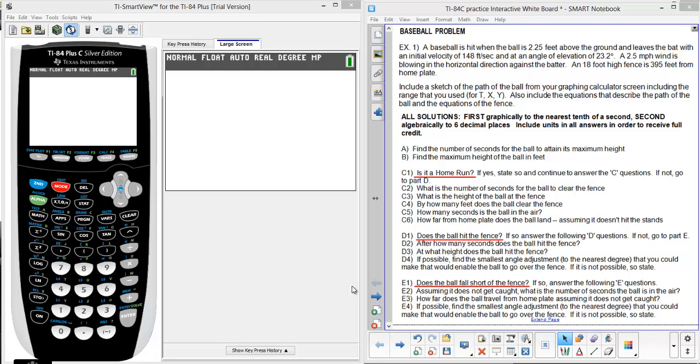Parametric graphing, the baseball problem on the new TI-84C. Baseball is hit when the ball is two and a quarter feet above the ground, leaves the bat with an initial velocity of 148 feet per second, and an angle of elevation of 23.2 degrees.